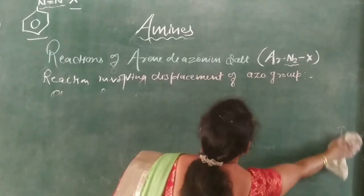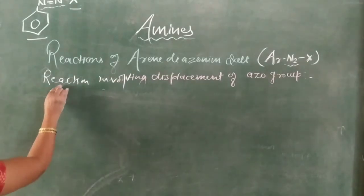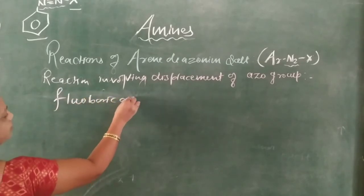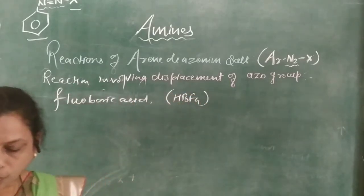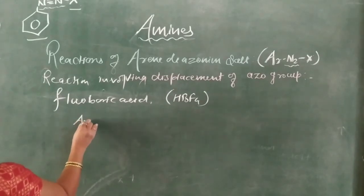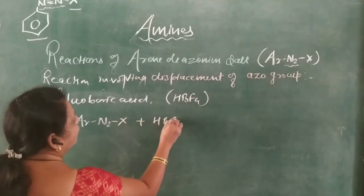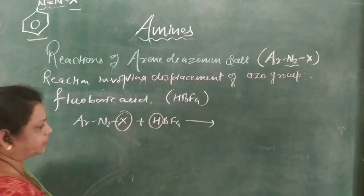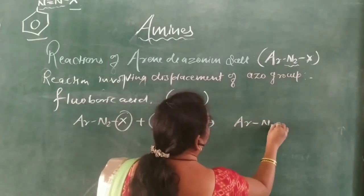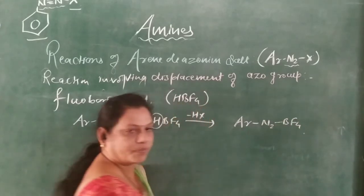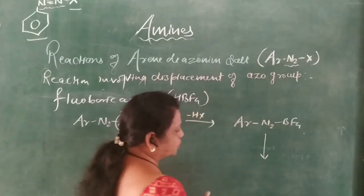After phenol formation, next is the action of aryl diazonium salt with fluoroboric acid HBF4. ArN2X reacts with HBF4: X combines with H to form HX, and the product is ArN2+BF4− — aryl diazonium fluoroborate salt, also called the fluoroboric salt or aryl diazonium fluoroboric salt.